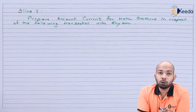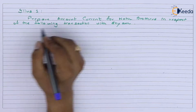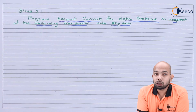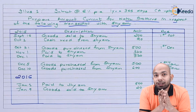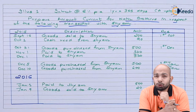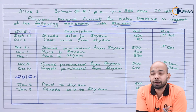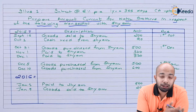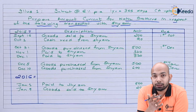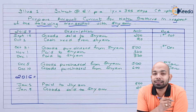The question states that we have to prepare an account current for Nath Brothers in respect of the transactions done with Sham. The illustration has a date column, a description column, an amount column, and a due date column. For 2015 and 2016 there are different kinds of transactions that happened between Nath Brothers and Sham. Wherever a payment is received or made there is no due date, but wherever a purchase or sale transaction happens, a due date is mentioned.